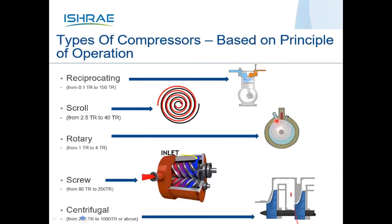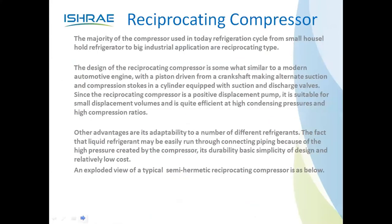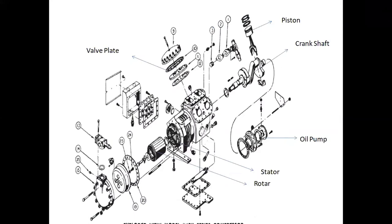Looking at the reciprocating compressor cross-section: a crankshaft connects to a piston via connecting rod, reciprocating within a cylinder liner and compressing gas. This is a semi-hermetic compressor where the motor is not separated — the rotor is on the same shaft with the stator winding on the compressor body. A semi-hermetic reciprocating compressor avoids refrigerant leakages, which is important for protecting our ozone layer.